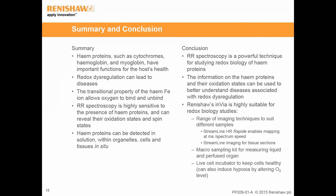Resonance Raman spectroscopy is a powerful technique for studying the redox biology of heme proteins, and the information on oxidation states can be used to better understand diseases associated with redox dysregulation. The Renishaw inVia is highly suitable for redox biology studies, with a comprehensive range of imaging techniques to suit different samples. StreamLine HR repeat imaging enables fast mapping at millisecond-per-spectrum speed; StreamLine imaging using a line laser is particularly useful for tissue imaging; the micro-sampling kit can be used for solutions or perfused organs; and the inVia can be coupled to a live-cell incubator to keep cells alive or stimulate them with environmental changes.